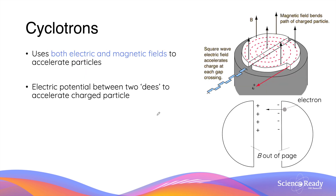Cyclotrons are particle accelerators that use both electric fields as well as magnetic fields. This is one big difference between the linacs and the cyclotrons, because linacs only use electric fields. The cyclotron consists of two main components: two semicircles called dees. Between the two semicircles we have an electric field created by a potential difference, and this potential difference is used to accelerate the charged particle as it crosses it.